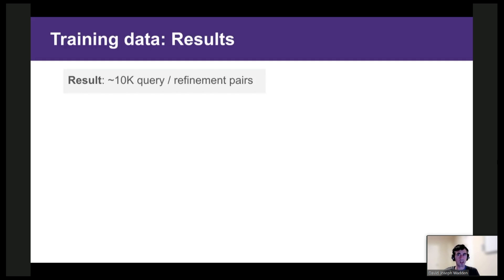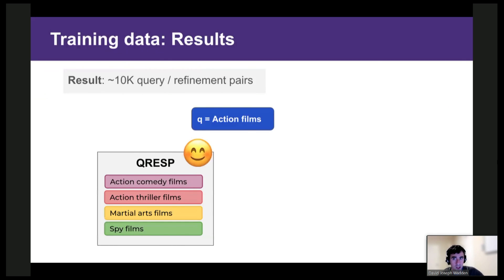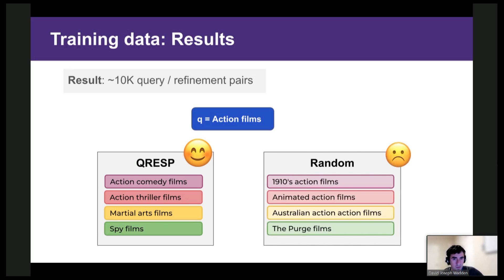So we ran this procedure on YAGO, resulting in roughly 10,000 query refinement pairs. So here's an example of the refinements chosen by QRESP for action films. And we can see that they cover four popular action film subgenres, things like action comedies and martial arts films. On the other hand, here are the results when we choose four random subcategories. We see that they're overly specific, like the purge films, or not particularly informative, like 1910s action films. So this provides some reassurance that our method is selecting high quality refinements.